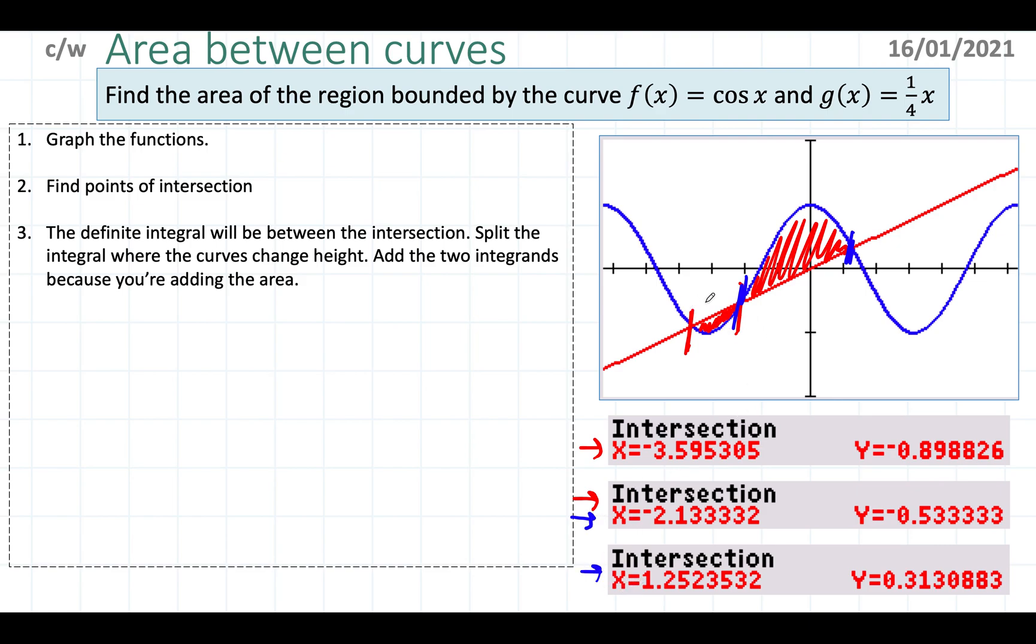In each case the top function is different. In here you have the red function at the top and in here you have the blue function at the top. These are things that are still the same with regards to any area between curves. This is me splitting up the integration. I know it goes from -3.6 to -2.1 and then from -2.1 to 1.3. I'm rounding it really quickly, but do write as many decimal places as you can within the integration.